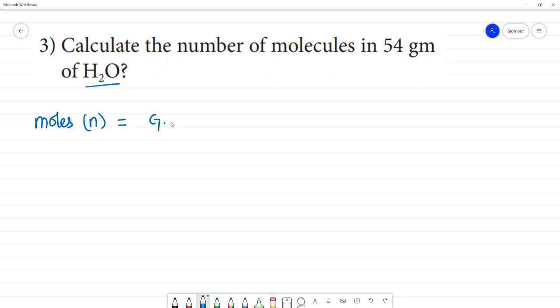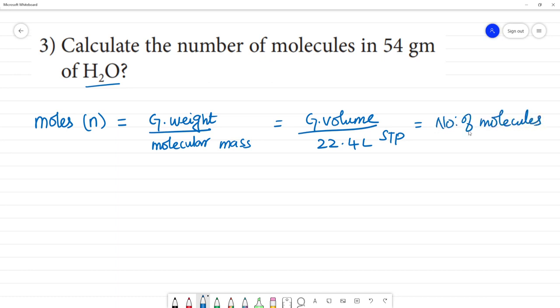So, this is equal to given mass or given weight by molecular mass. That is equal to given volume by 22.4 liters at STP. Otherwise, number of molecules by Avogadro number. Avogadro number is 6.023 into 10 to the power 23. Clear?